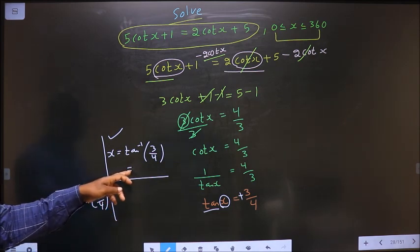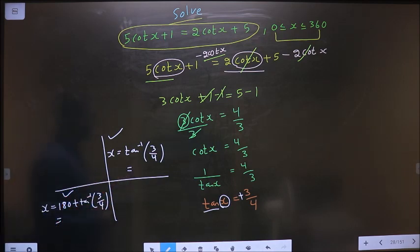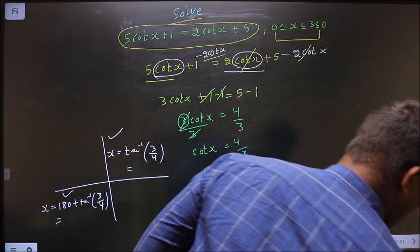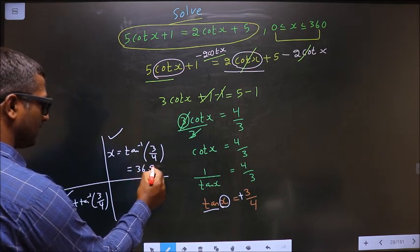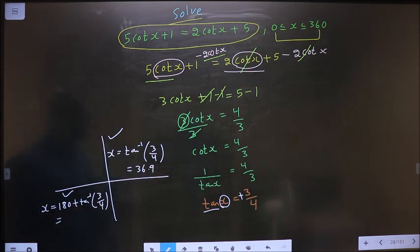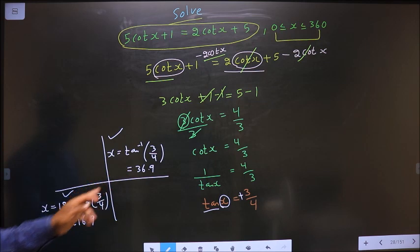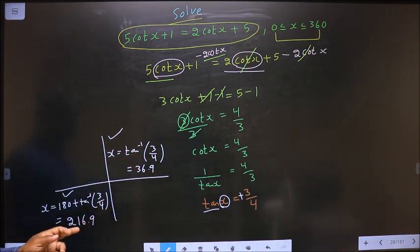Now you put this in the calculator, you should get 36.9. You put this in the calculator, you should get 216.9. These are our answers. Am I clear?